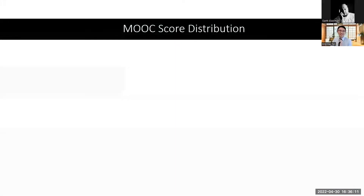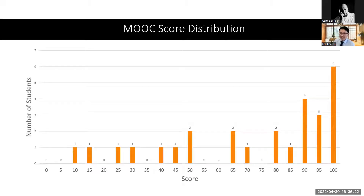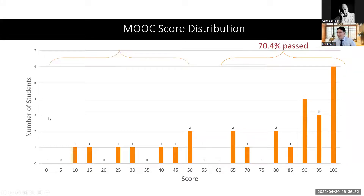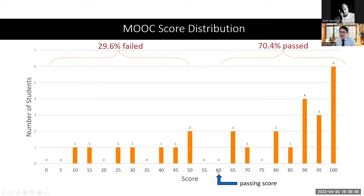Moving on, still on Moodle — so they have to do it by themselves. How willing are they to complete things independently? Of course, it is graded. To pass these components they need 60 points and above. So 70.4% passed, and about 30% did not do their work well. This is a distribution of the scores. The passing mark is 60.